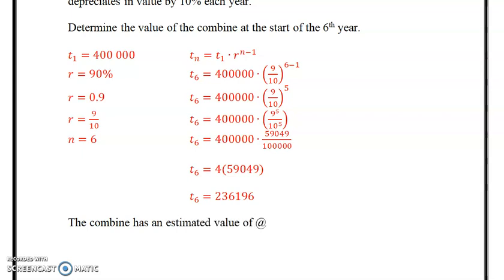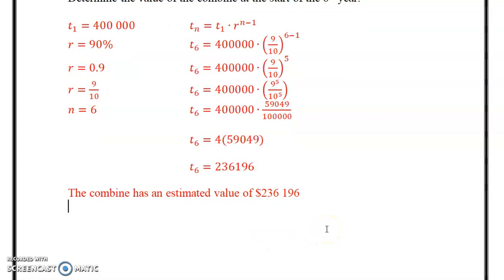So that means that the combine has an estimated value of $236,196 after, or at the beginning of the sixth year. So that's what that means.